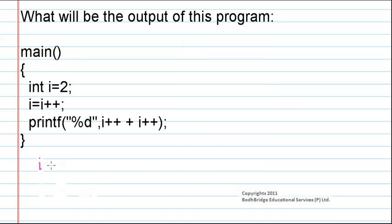Initially, the value of i is 2, and in the next step we increment the value of i. So after evaluating this expression, the i value will become 3. In the printf statement, the argument given is %d i++ plus i++.